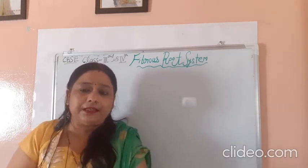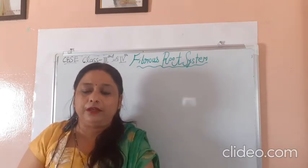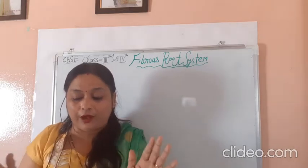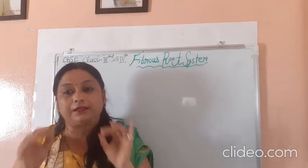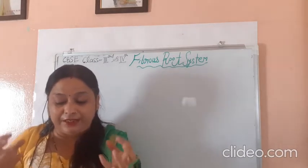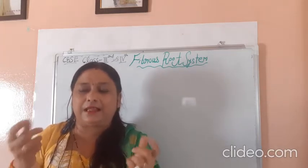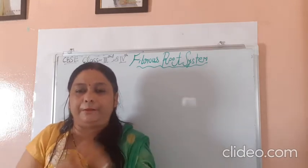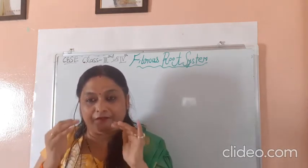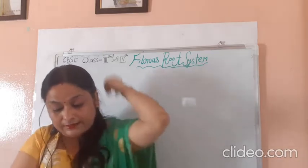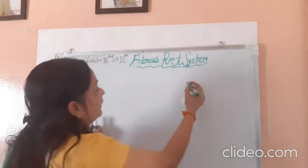In the previous lesson we already discussed the tap root system, which has a main root and fibers. Some plants do not have a main root — they mainly have thin, fiber-like roots of similar size. Plants like wheat, grass, maize, and millet do not have a main root; instead some fiber-like structures arise from a main point.